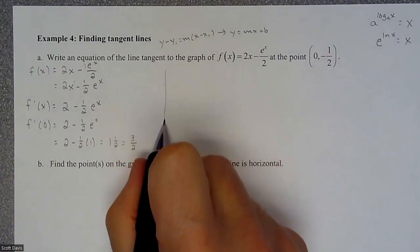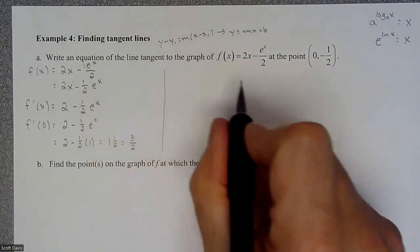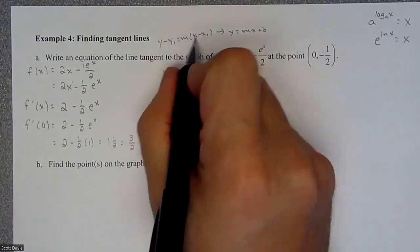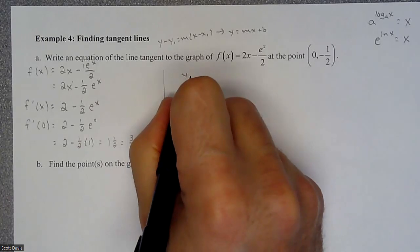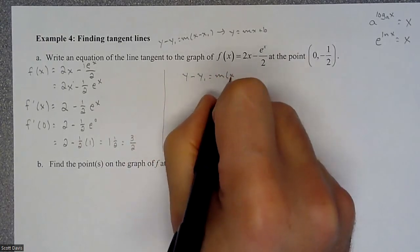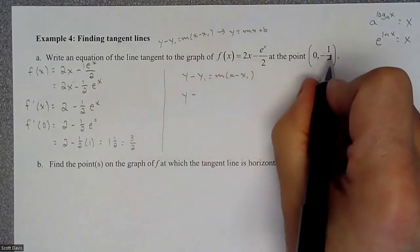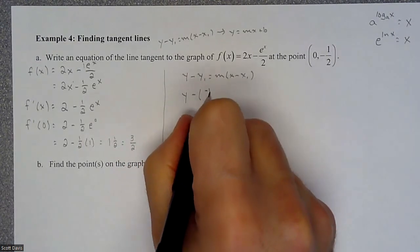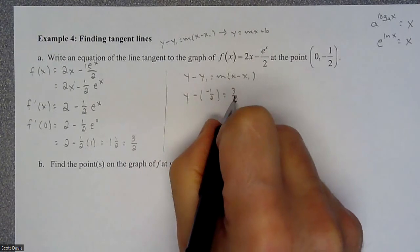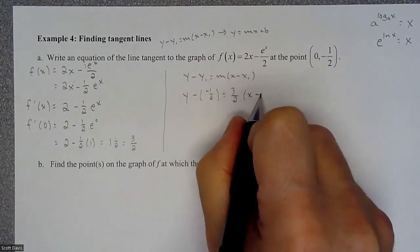So that's our slope at 0. And so now, that's the calc part. So now, we're going to kick into finding the tangent line. So this equation, we're going to be using y minus y1 equals m times x minus x1. So we got y minus negative 1 half equals 3 halves, because that's what our calc was to find our slope, and then x minus 0.